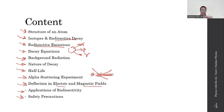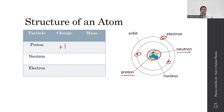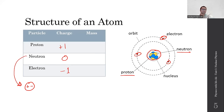An atom is the building block of matter. It consists of three subatomic particles: protons, neutrons, and electrons. Protons and neutrons exist inside the nucleus — the core of the atom — and electrons orbit in different energy levels and shells around the nucleus. Protons have a relative charge of +1, electrons have a relative charge of −1, and neutrons are neutral. However, neutrons are not truly uncharged — they have both positive and negative charge in equal amounts, giving a resultant charge of zero. This is relevant when we discuss beta decay.